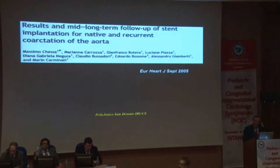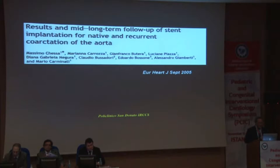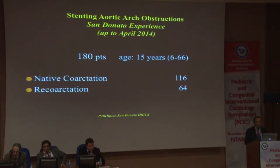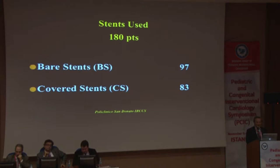Some years ago we published a paper about the results and long-term follow-up of stent implantation for aortic coarctation, demonstrating good but not perfect results. Our total experience up to April 2014 consists of 180 patients with a median age of 15 years, with both native coarctation — the majority — or recurring coarctation after surgery. We used bare metal stents and cover stents in this experience.